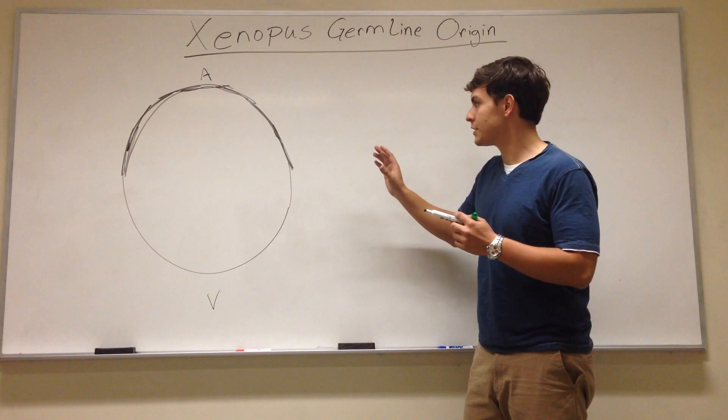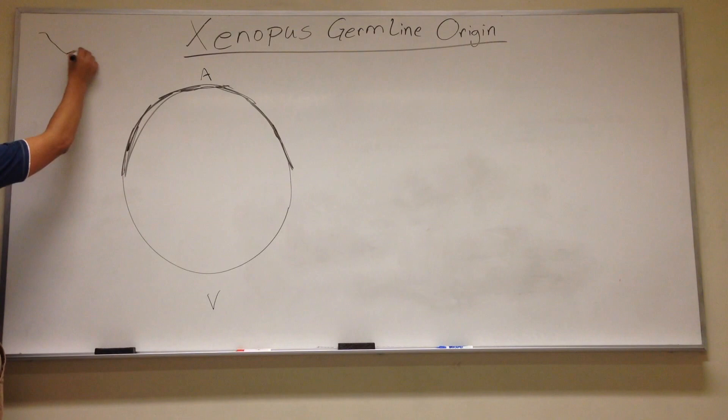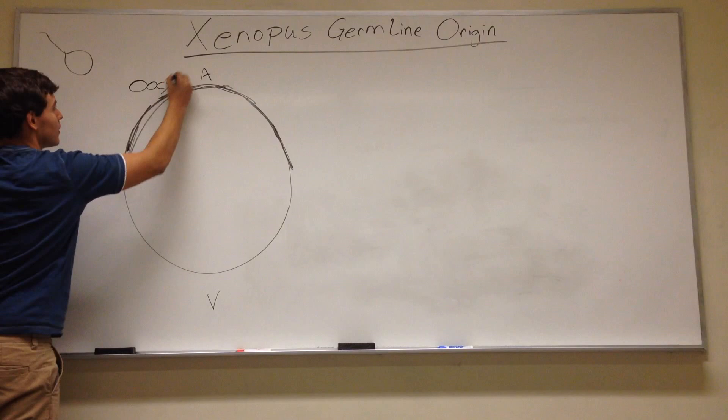So this is an oocyte before fertilization. We can draw a sperm in over here and say that it hasn't happened yet. So clearly just an oocyte.